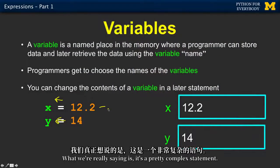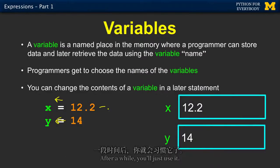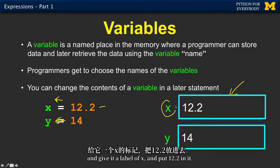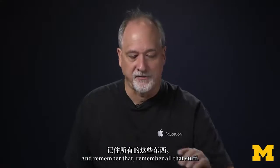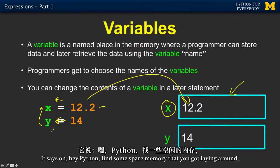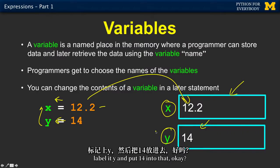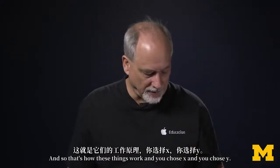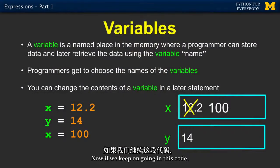Looking at this very first statement, what we're really saying is: Python, find us a spare piece of memory somewhere, give it a label of x, and put 12.2 in it. Remember that. Then the second statement says: hey Python, find some spare memory, label it y, and put 14 into that. That's how these things work — you chose x and you chose y.